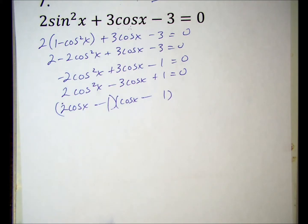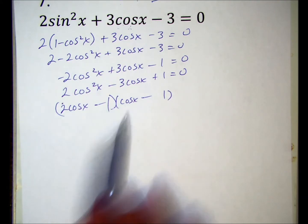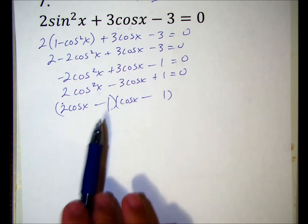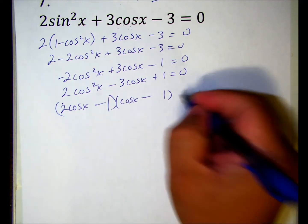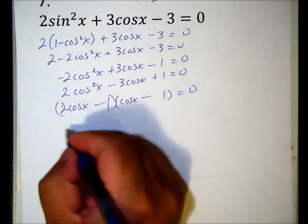Let's double check: the inside gives me negative cosine x, the outside gives me negative two cosine x, negative one cosine x and negative two cosine x gives me the negative three cosine x. Set each factor equal to zero.